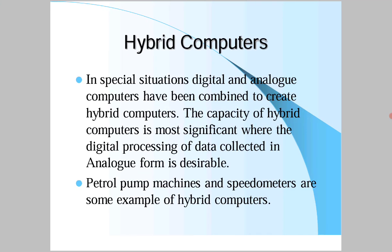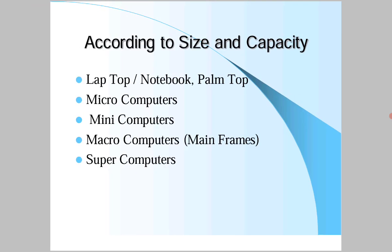Hybrid computers have both the features of digital and analog computers. In special situations, digital and analog computers have been combined to create hybrid computers. The capacity of a hybrid computer is most significant where digital processing of data collected in analog form is desirable. Petrol bomb machines and speedometers are examples of hybrid computers. This concludes the first type of computer classification - according to functionality.